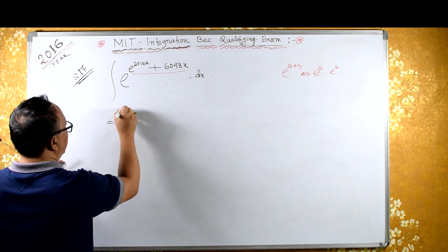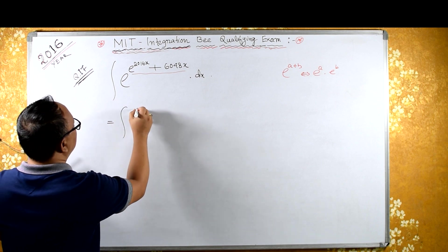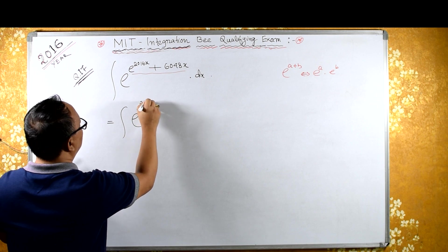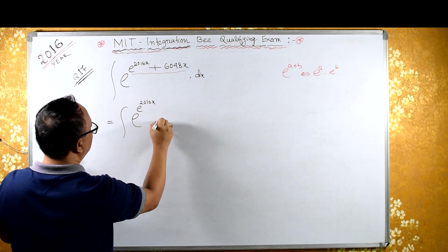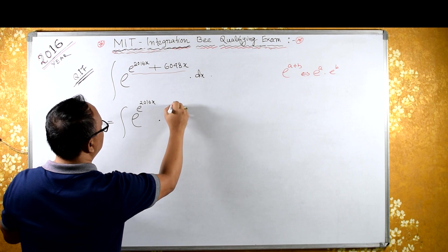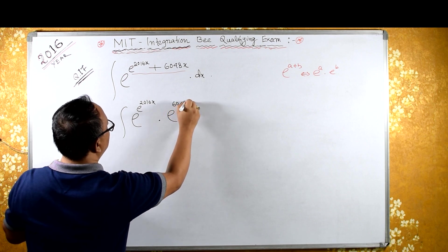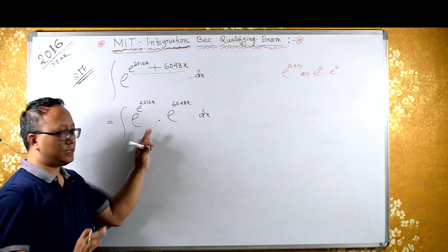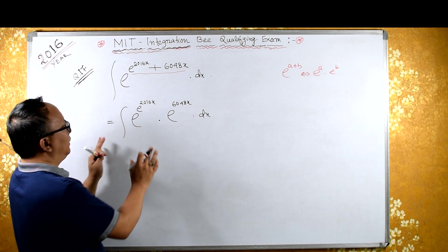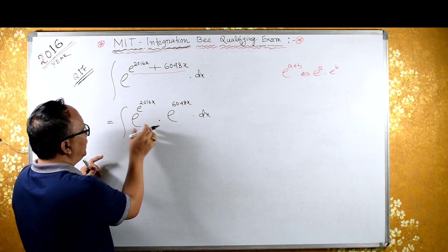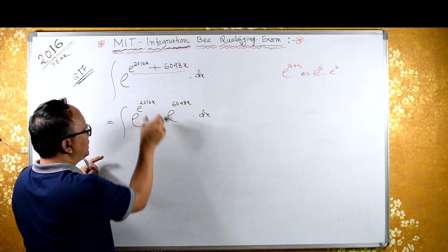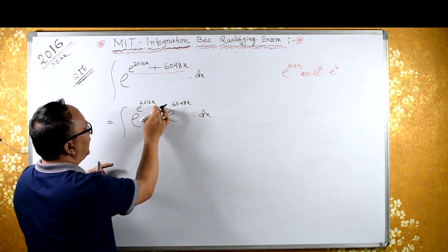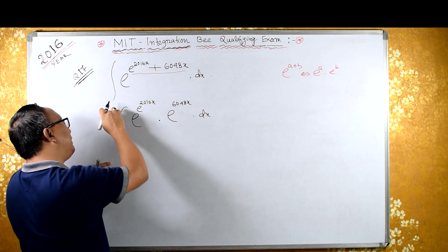Therefore we can separate e raised to these indices. This is the same as the integral of e raised to e raised to 2016x, into e raised to 6048x, into dx. What I am doing is splitting — this raised to this, this raised to this. Since bases are the same, therefore you can add this plus this, and therefore this is the same as this.